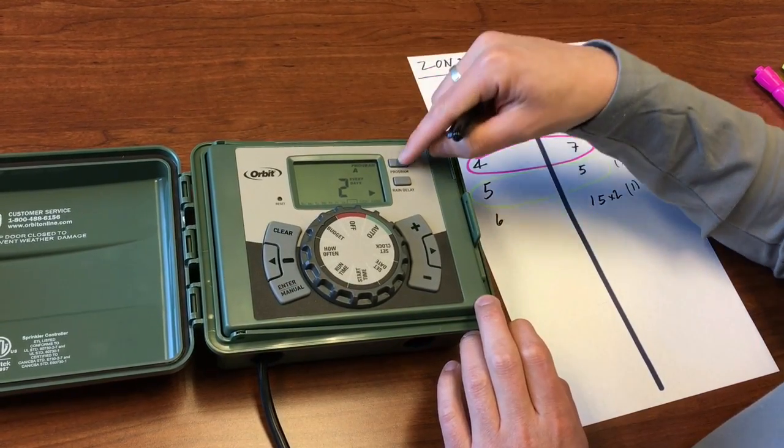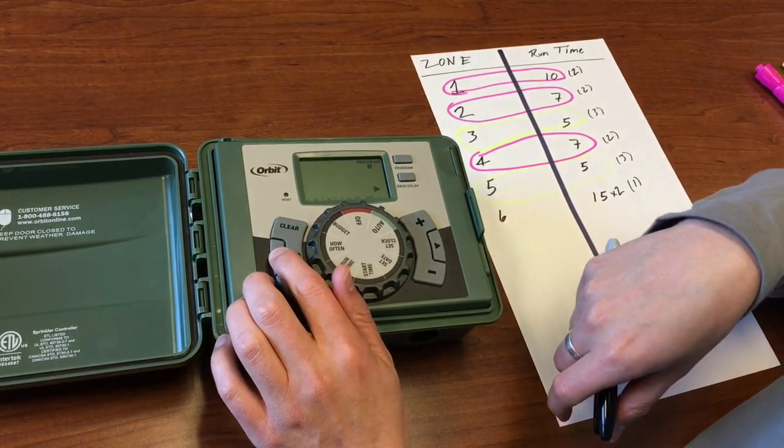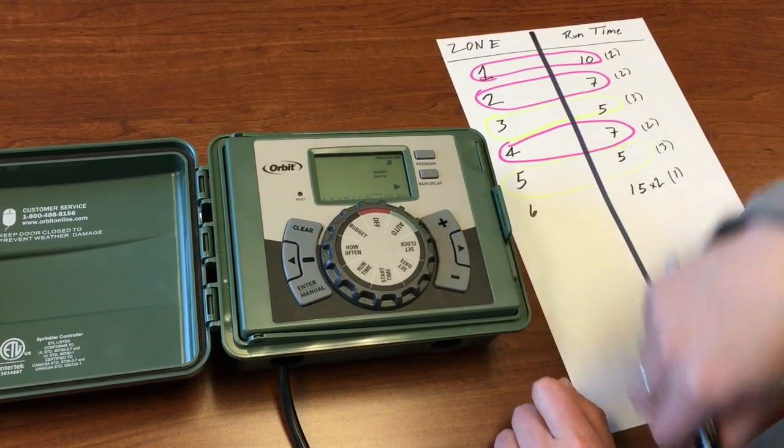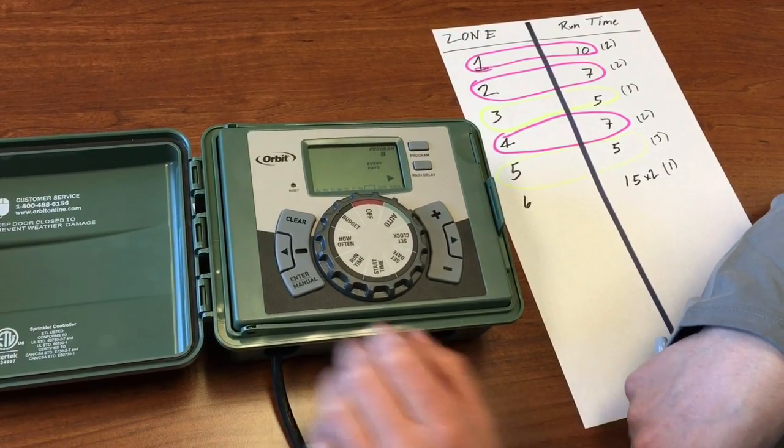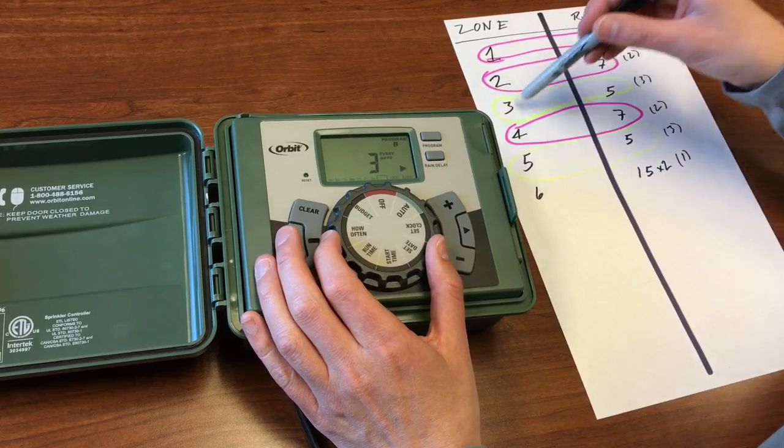Those times are set. Now how often? Again remember we need to change our program to program B. This one we're going to do every third day. In that case the interval is probably also the best option. We'll set that to once every three days and hit enter. Now program B is set.